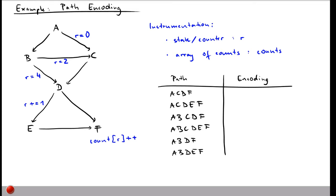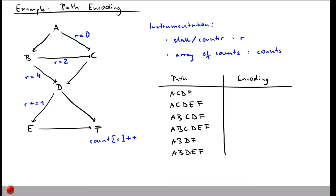Now given this instrumentation, let's look at all six paths from A to F and see what encoding each gets. Starting with path ACDF: going from A to C sets R to 0, then we go C to D, D to F. R remains 0, so this path is encoded as 0.